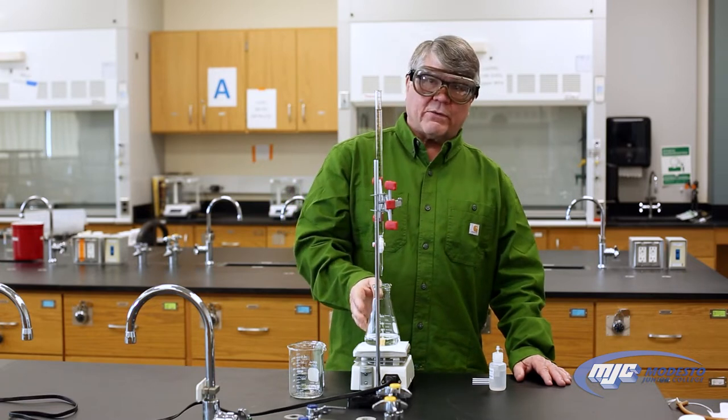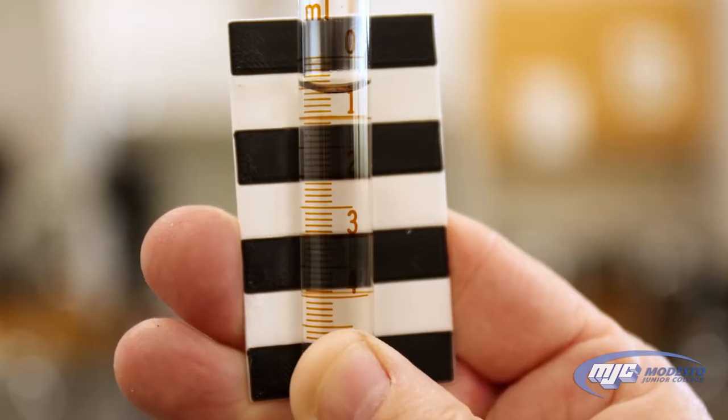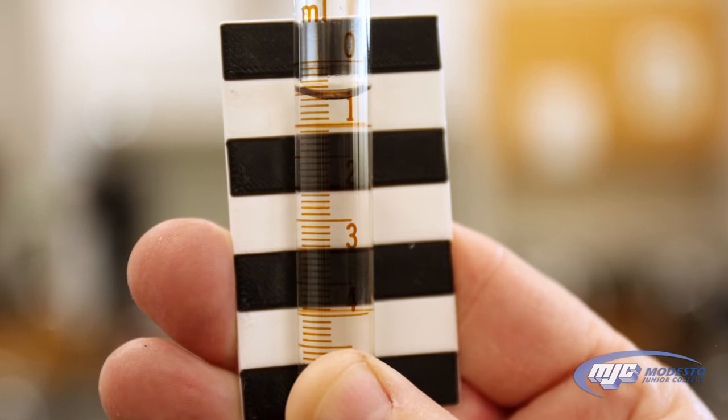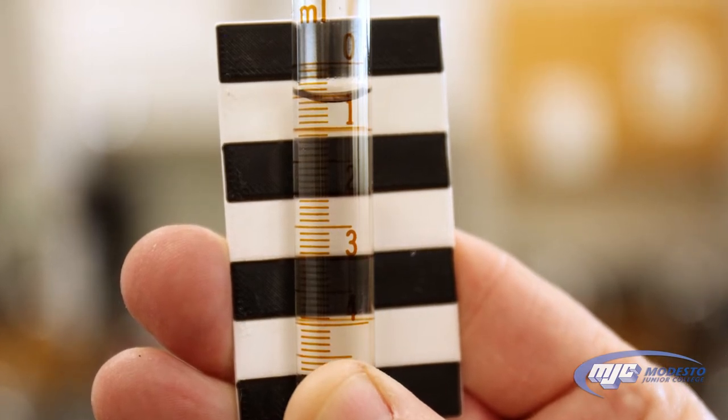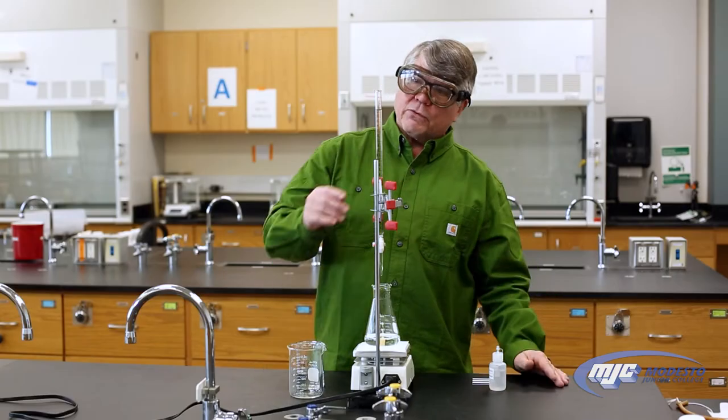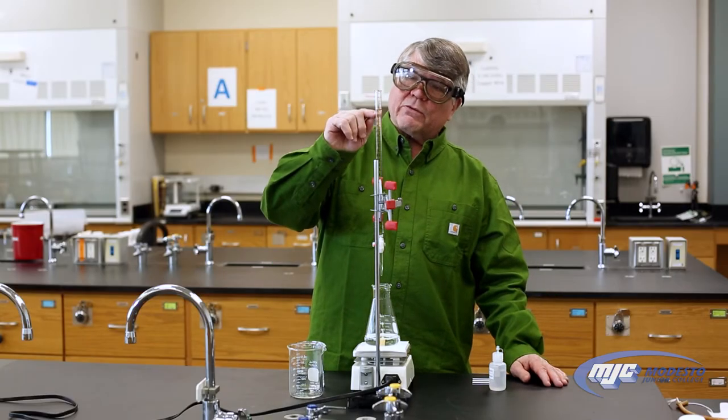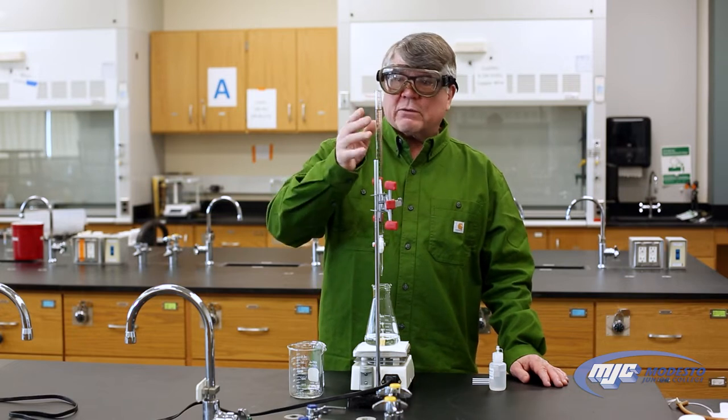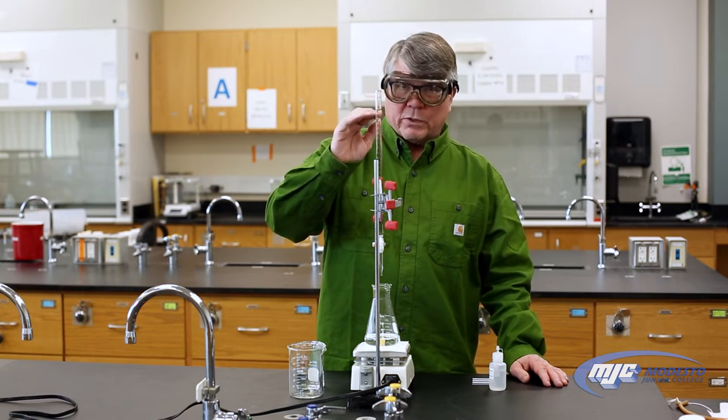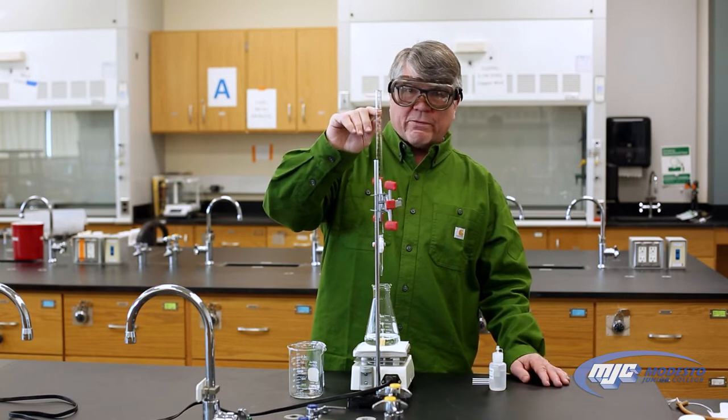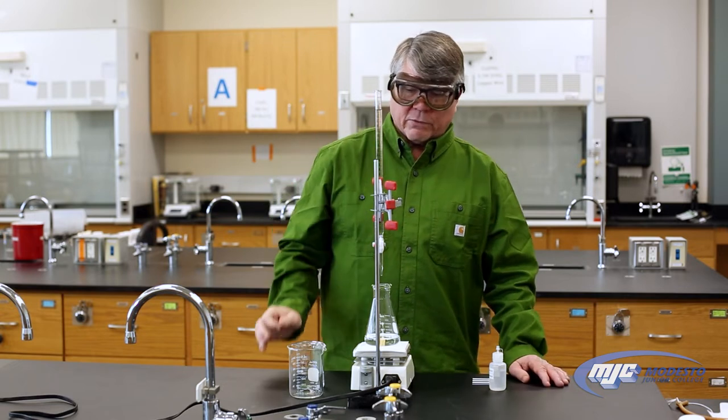And down here in the Erlenmeyer flask, this will be your unknown acid. I've already read my initial volume. That's really important to read too. So I read this and it looks to me like it's about 0.59 milliliters. Remember, two places past the decimal. And also we're reading the volumes directly from this scale here. Don't add or subtract anything to that number. We just read the number directly. So it's zero at the top, I'm reading about 0.59 milliliters. That's my initial volume.